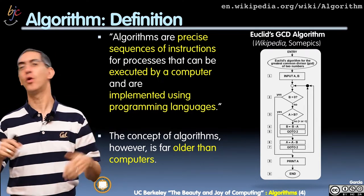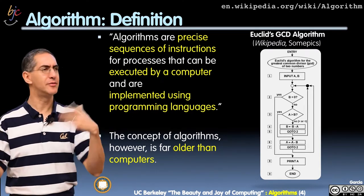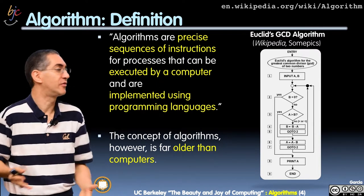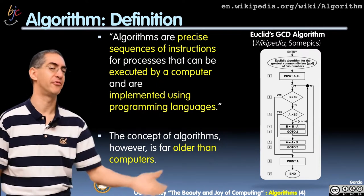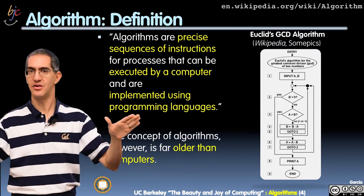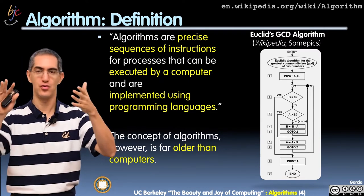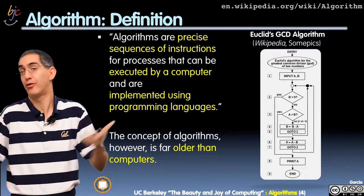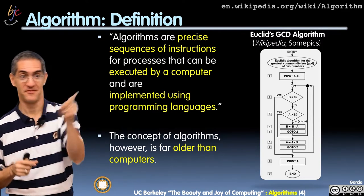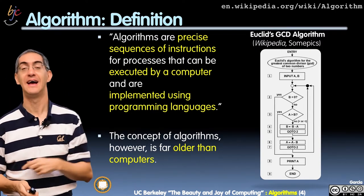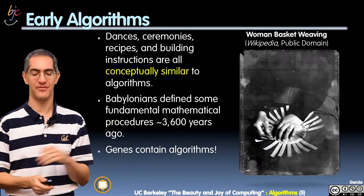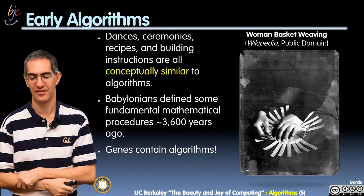People might say algorithms must be relatively new because computers are relatively new — computers came out in the 40s and 50s, so you've only had algorithms since then, right? Wrong. Very, very wrong. Algorithms predate thousands of years.